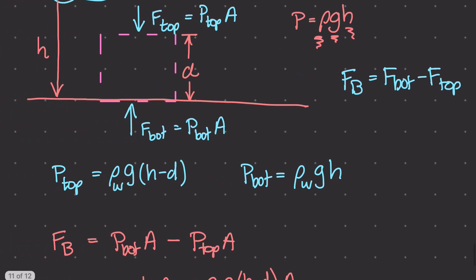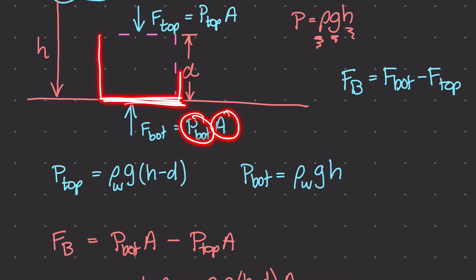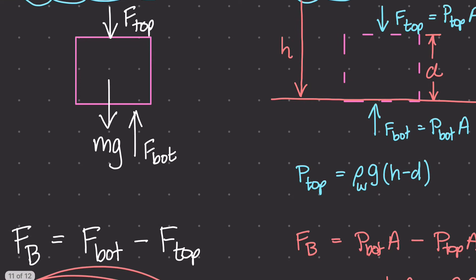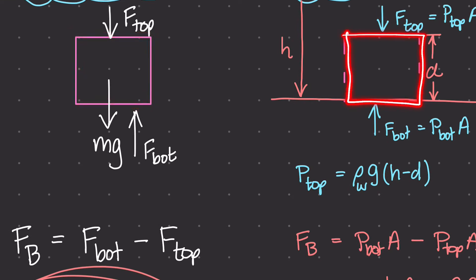For an example, F sub bottom — which is this force right here — is equal to the pressure at the bottom times the surface area at the bottom of that object. This box right here was just the space where this object was, so this is the amount of water that got displaced. And F bottom was P bottom times A.